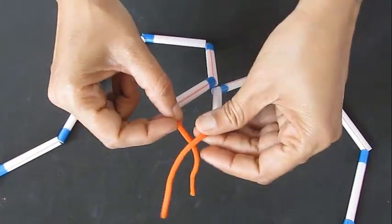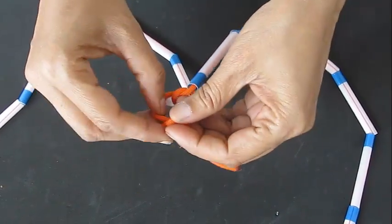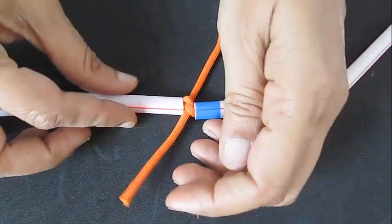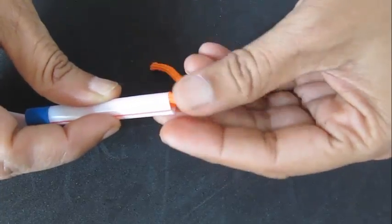Tie the loose ends of the string and insert the loose ends inside the straw, and now you can make them in a perfect circle.